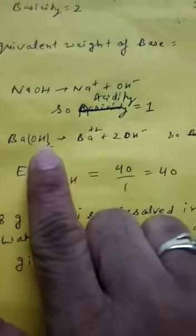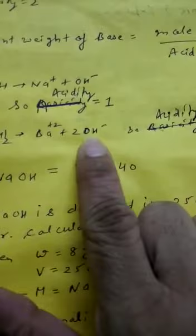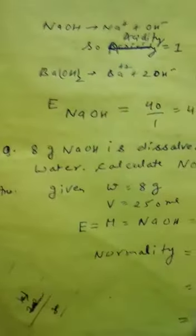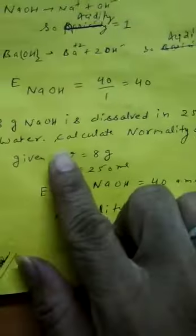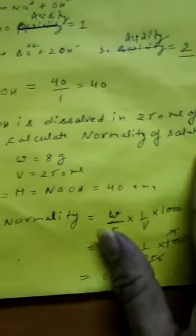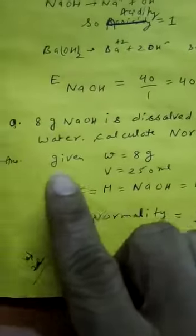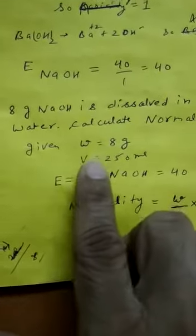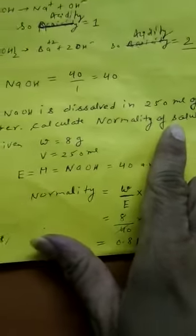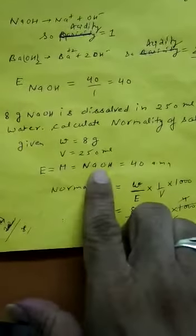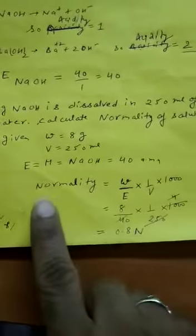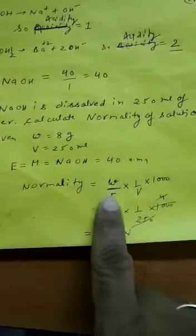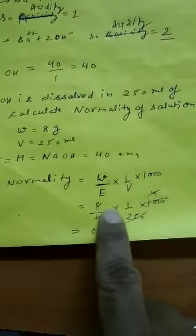Numerical example: 8 grams of NaOH is dissolved in 250 mL of water. Calculate the normality of the solution. Given: mass of NaOH = 8 g, volume = 250 mL, and equivalent weight of NaOH = 40. Applying the formula: normality equals W upon E multiplied by 1 over V(mL) multiplied by 1000, we get 8 divided by 40, multiplied by 1 over 250, multiplied by 1000. The answer is 0.8 N.